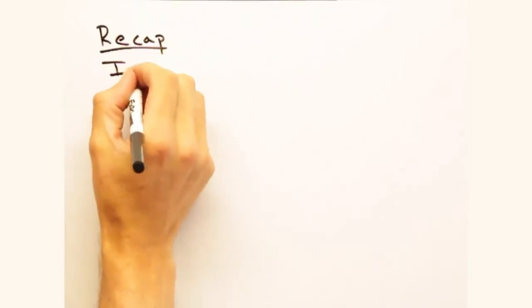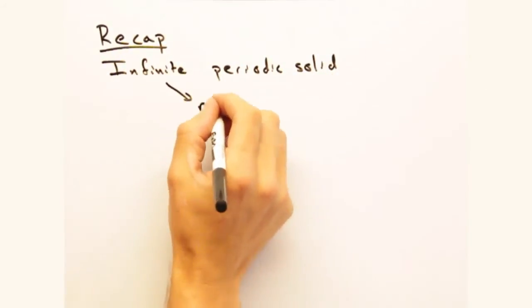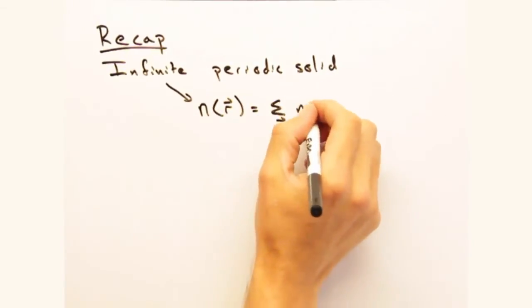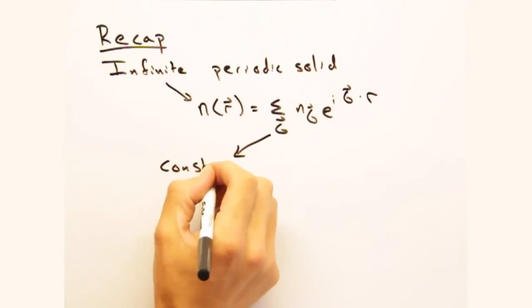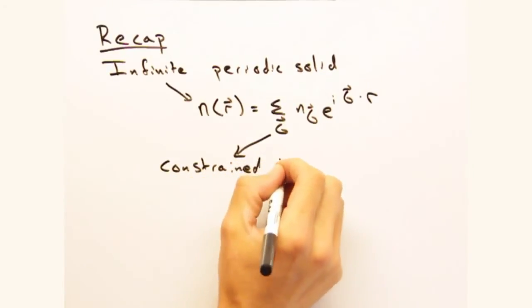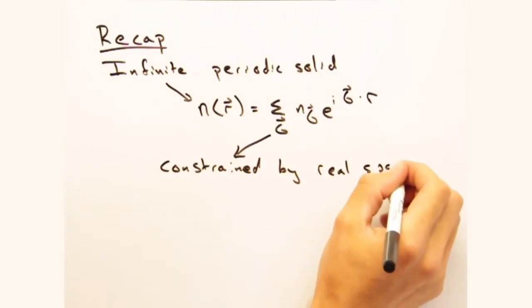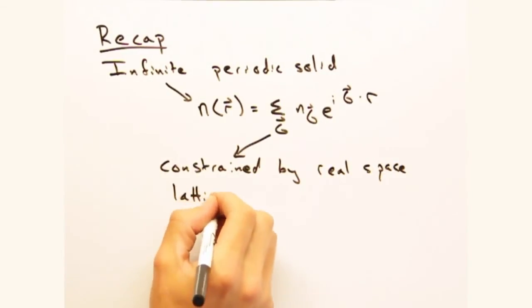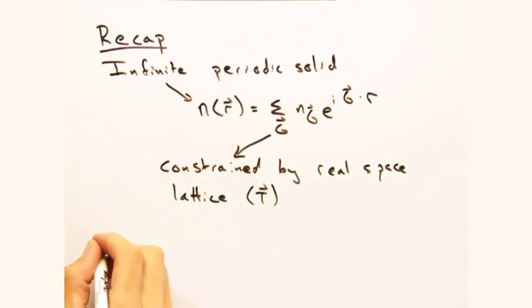So at this point, it looks like we have a well-developed expression for n of r. From assuming that an infinite periodic solid, we built a Fourier series out of complex exponentials that contained this Fourier space vector g. And constraining g and its constituent vectors in terms of the real space lattice vectors ensured translational symmetry was satisfied, and led us to explicit expressions for g1, g2, and g3.